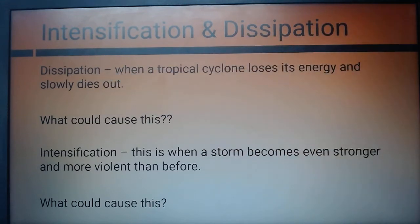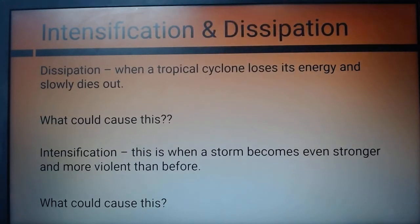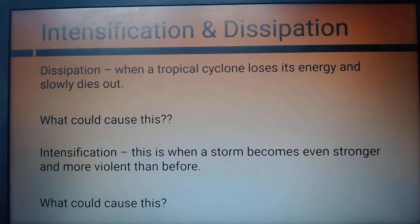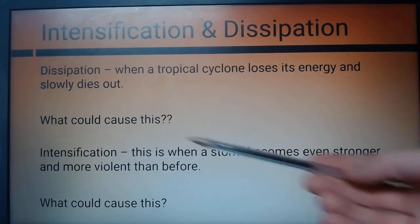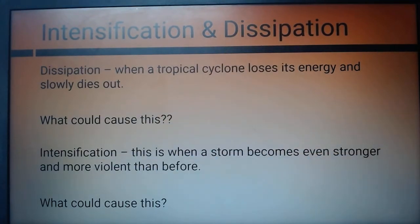So the three things that cause dissipation are: moving over cold water, moving over land, or winds that are too weak or too strong — the shear winds. Once you have that done, write down intensification. This is when a storm becomes even stronger and more violent than before, so it intensifies.